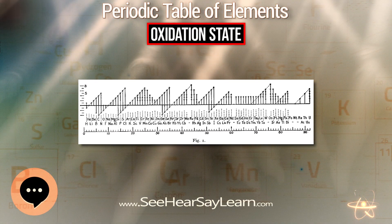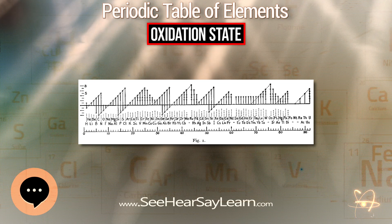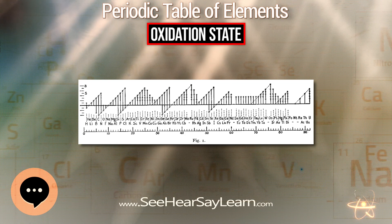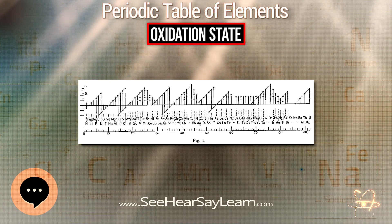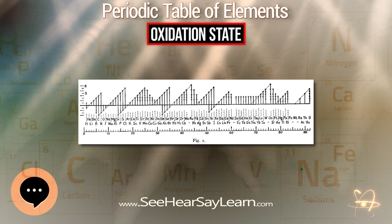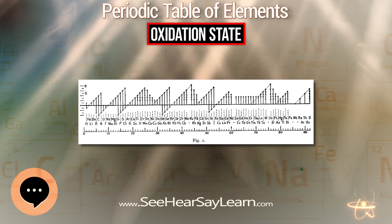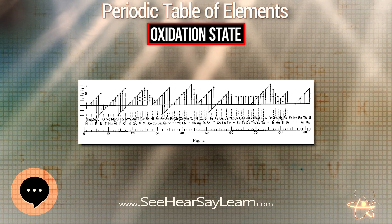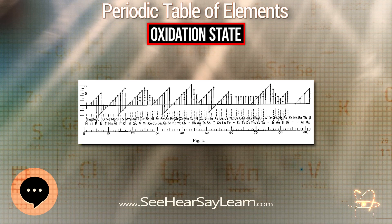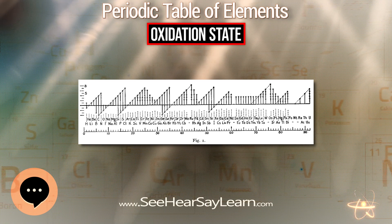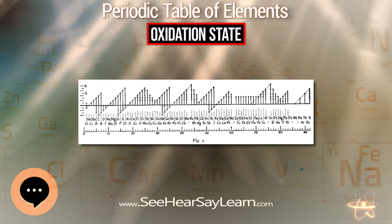This is a list of known oxidation states of the chemical elements within chemical compounds, excluding non-integral values. The most common states appear in bold. The table is based on that of Greenwood and Earnshaw, with additions noted. Every element exists in oxidation state 0 when it is the pure, non-ionized element in any phase, whether monatomic or polyatomic allotrope.